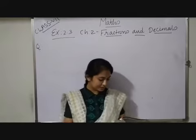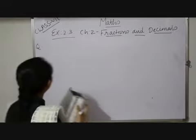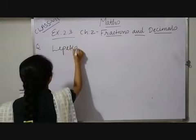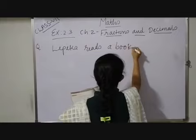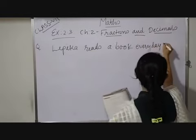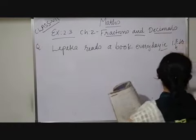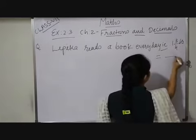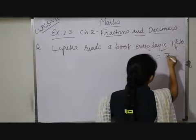Lipika reads a book for 1 and 3/4 hours every day. So here I am writing what is given. Lipika reads a book every day, that is 1 and 3/4 hours, which equals, if I convert it into an improper fraction, I will get 4 in the denominator. 4 ones are 4 plus 3, which is 7/4 hours.